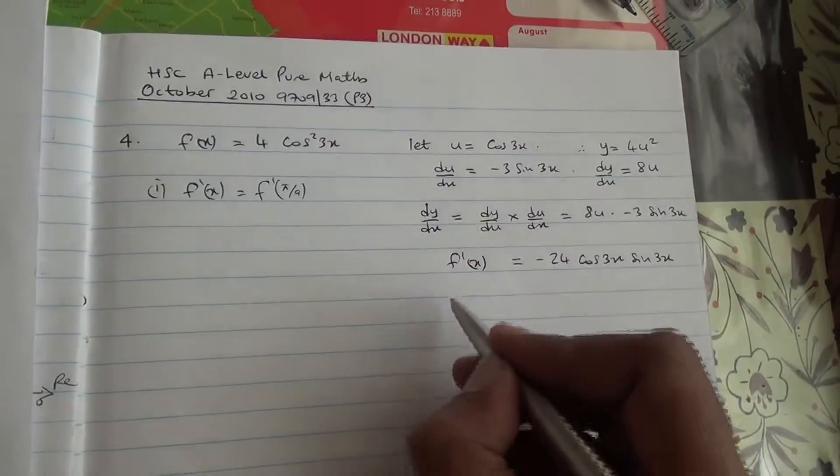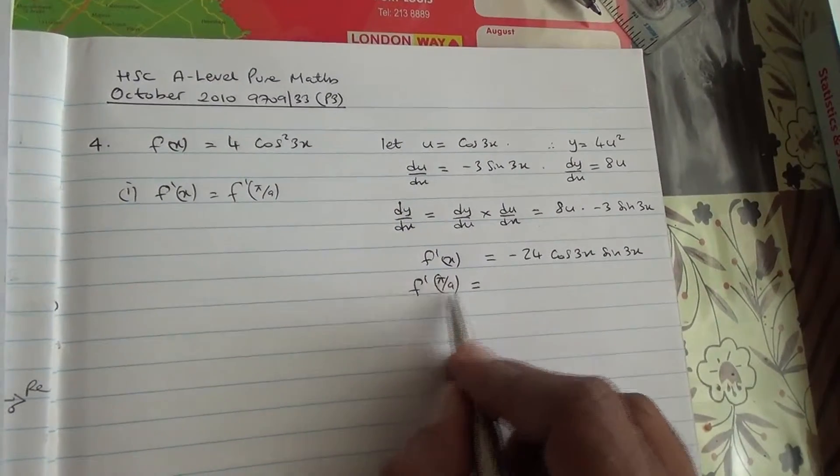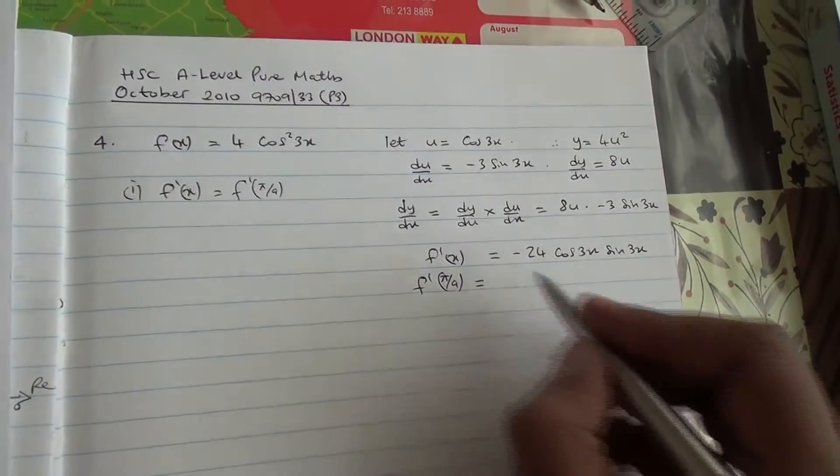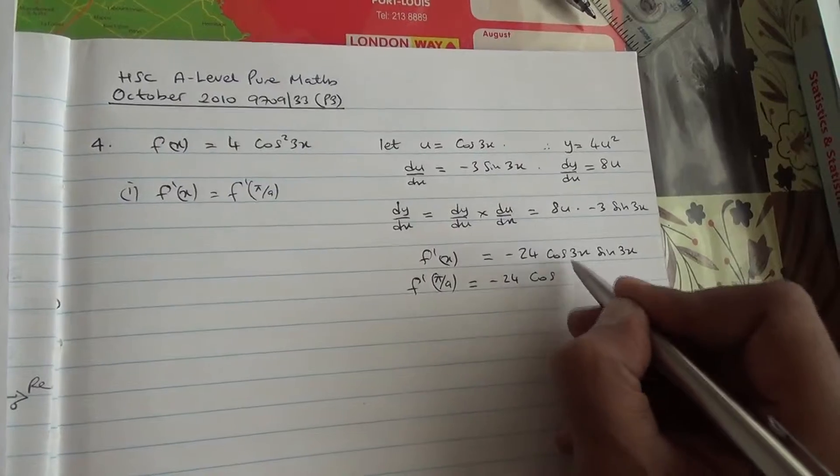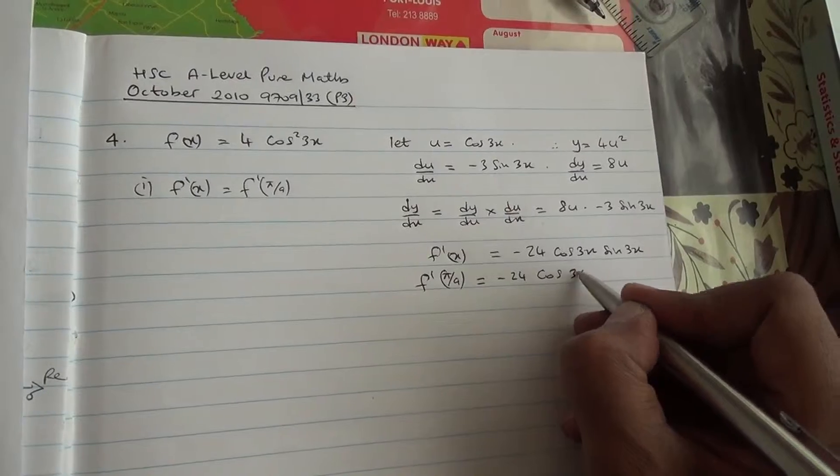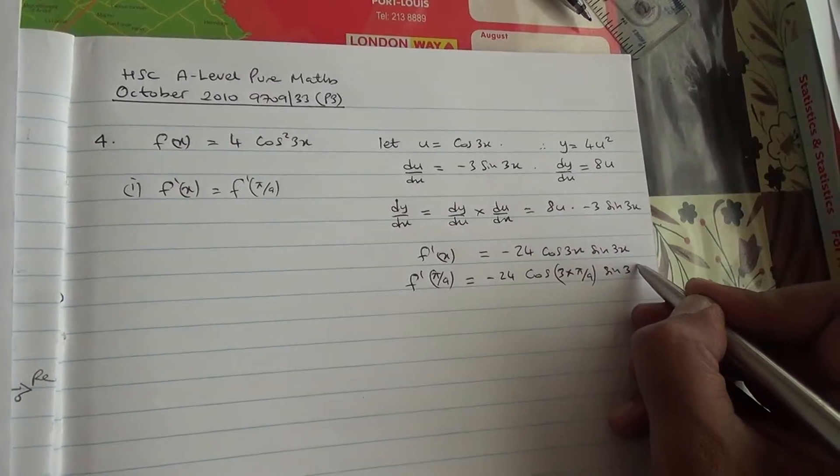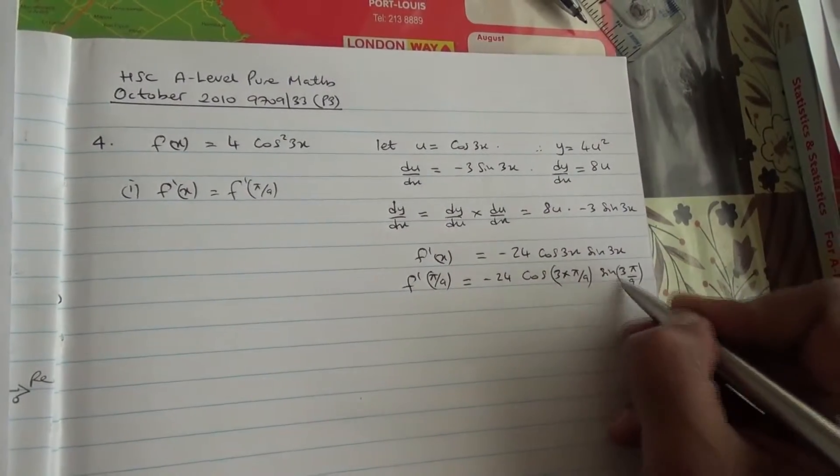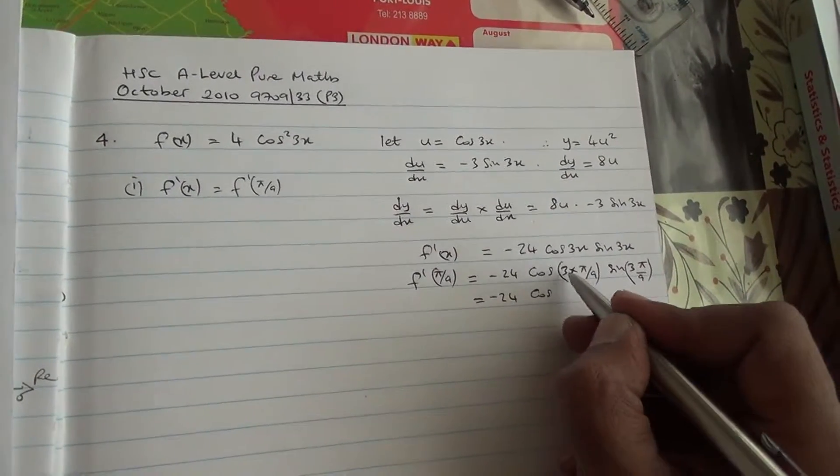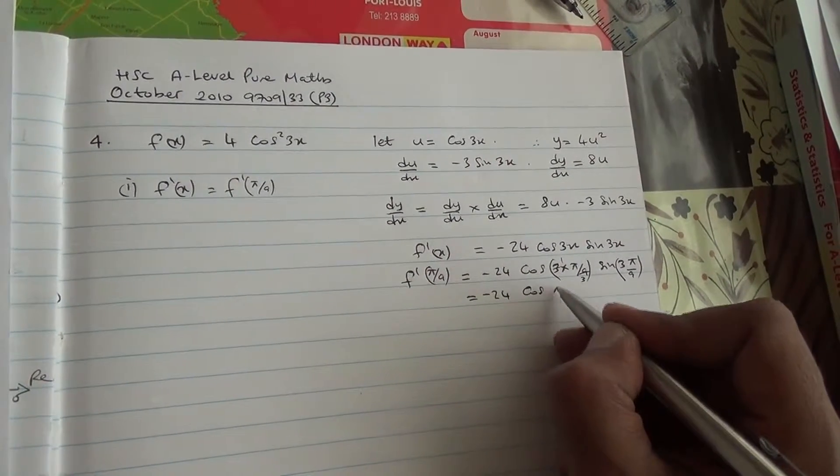Now, we've been asked to find f dash π/9. So we just need to substitute that value into the derivative of the function. So we've got minus 24 cos of 3 times π/9, times sin of 3 times π/9. And we have minus 24 cos of π/3, because 3 goes into this, so we've got π/3.